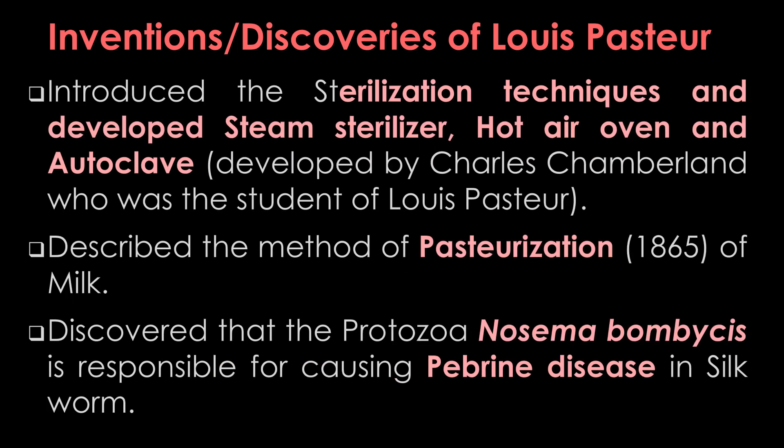Pasteur introduced sterilization techniques and developed the steam sterilizer, hot oven, and autoclave. The autoclave was developed by Charles Chamberlain, a student of Louis Pasteur. He described the method of pasteurization in 1865 — a method of fractional sterilization of milk. He also discovered the protozoan Nosema bombycis, responsible for causing pebrine disease in silkworms, and suggested that disease-free caterpillars can eliminate the disease.